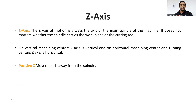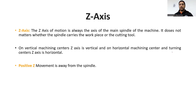Now let us understand all these axes one by one. The Z-axis of motion is always the axis of the main spindle of the machine. It does not matter whether the spindle carries the workpiece or the cutting tool — we always take Z-axis along the spindle. On vertical machining centers, Z-axis is always vertical. On horizontal machining centers, Z-axis is always horizontal, as in turning centers also. Positive Z movement is away from the spindle.